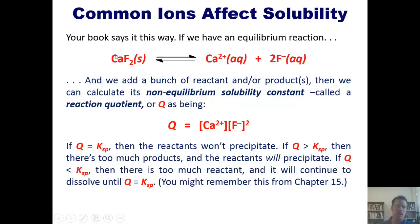Now, if Q is less than KSP, then there's too much reactant and it will continue to dissolve until you add enough product or reactant to make you reach KSP. You might remember something like this from chapter 15. Does that make sense?